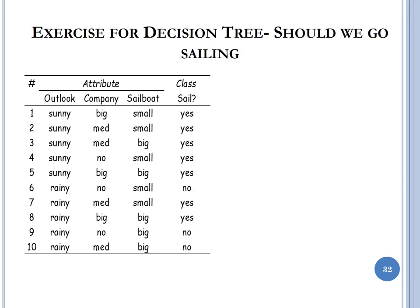Now let's construct another decision tree. We want to predict whether we will go sailing or not — yes or no — as a function of three attributes: outlook (sunny or rainy), whether we have company to come with us on the boat, and whether the sailboat is small or big.